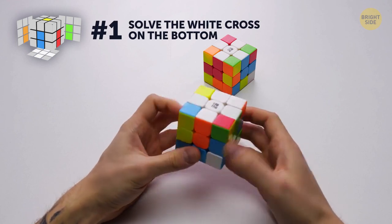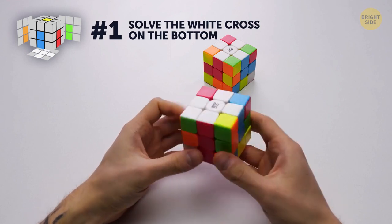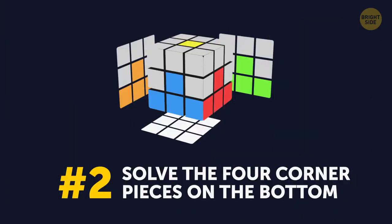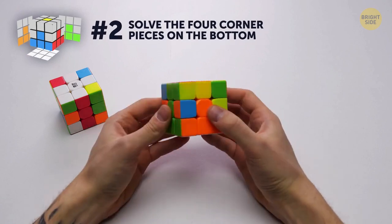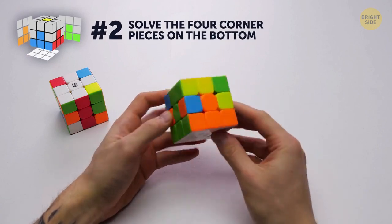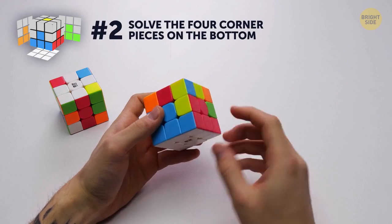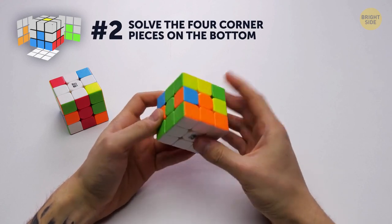And this is how you get a white cross at the bottom. Number 2. Solve the four corner pieces on the bottom. At this stage, you'll have to put the lower corners of the cube in the right places, and the white side of the cube will be solved.